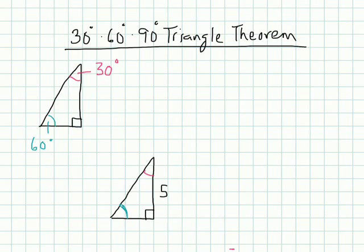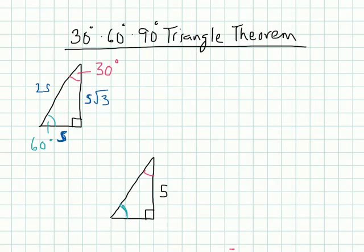Knowing that, we can label our sides. The smallest side is going to be x, or whatever variable you want. The next biggest — the long leg — is going to be x rad 3. And the hypotenuse, the longest one, is 2 times x. So in a 30-60-90 triangle, the length of the hypotenuse is twice as long as the shorter leg, and the length of the longer leg is rad 3 times the length of the shorter leg.